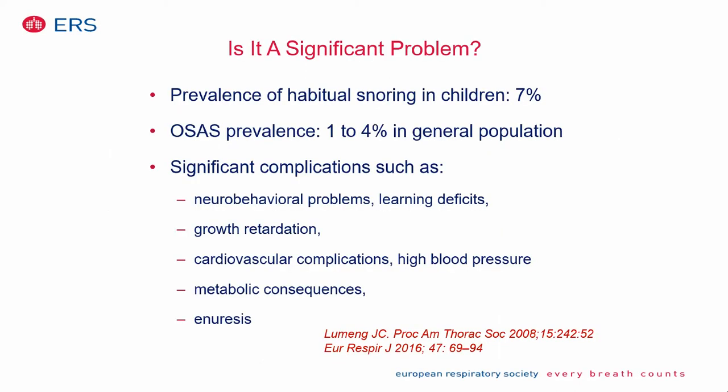Is this a significant problem? It's quite prevalent — children snore quite a bit, about 7% of the normal population — but not every child with snoring has obstructive sleep apnea. The prevalence of OSA in the general population is 1-4%, but it's much higher in risk groups such as Down syndrome or children with obesity. It is significant because it's associated with complications such as neurobehavioral problems, learning deficits, growth retardation, cardiovascular complications including high blood pressure and pulmonary hypertension, metabolic consequences, and enuresis.